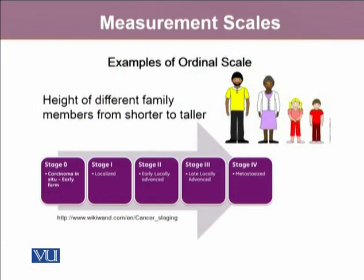Examples of ordinal scale include the height of different family members from shorter to taller, where a son is the shortest and the father is the tallest. Similarly, the stages of cancer: stage 0 is the early form, stage 1 is localized, stage 2 is early locally advanced, stage 3 is late locally advanced, and stage 4 is metastatic. The stages clearly indicate the risk involved, but we cannot say that the gap between stage 1 and stage 2 is the same as between stage 2 and stage 3 — that could be different. This is just an order, and the order does not contain any significant equal weightage.